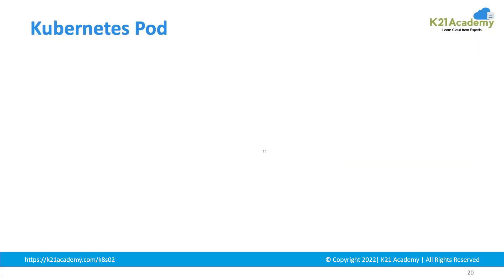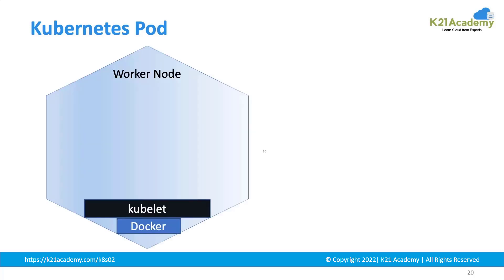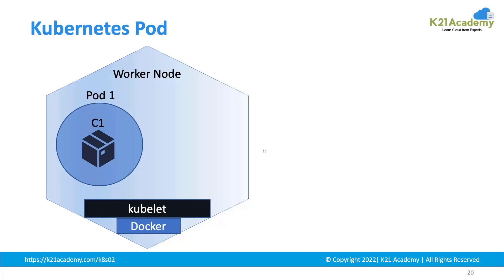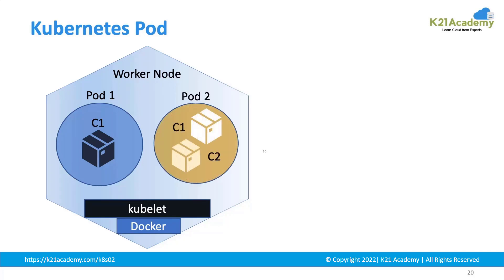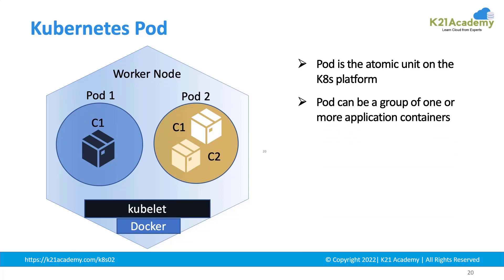The third basic component, which is the basic building block of Kubernetes, is the pod. We have the worker node in which Docker and kubelet are running, and whenever we want to create any container, it gets wrapped up by a component called a pod — and inside the pod, the container actually runs. Pod is the atomic unit or the smallest unit on the Kubernetes platform. It can be a group of containers or a single container wrapped up in a pod.